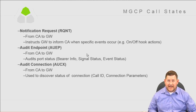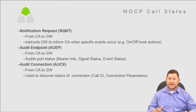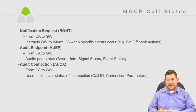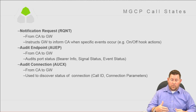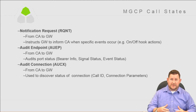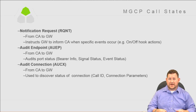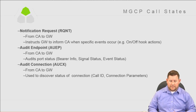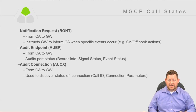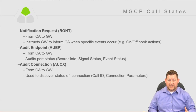Audit Endpoint, AUEP, is from the call agent to the gateway and audits port status — bearer info, signal status, event status. Audit Connection audits one specific connection. The distinction: Audit Endpoint comes back with statuses on different channels available on the gateway, while Audit Connection returns specific information on a single connection. A good way to remember: Audit Endpoint ends in P for port, meaning many connections; Audit Connection is one specific connection.